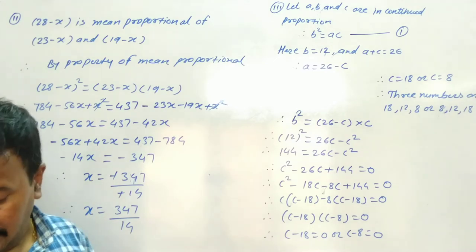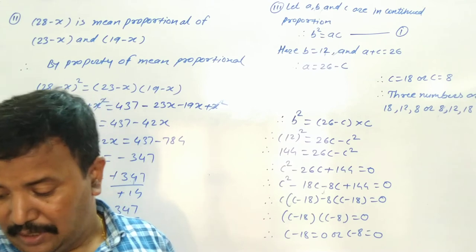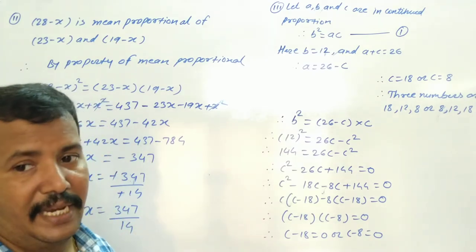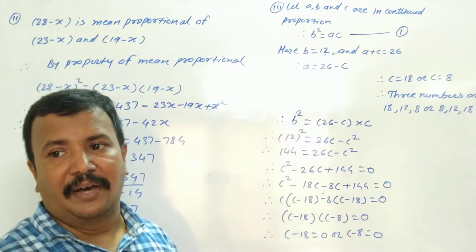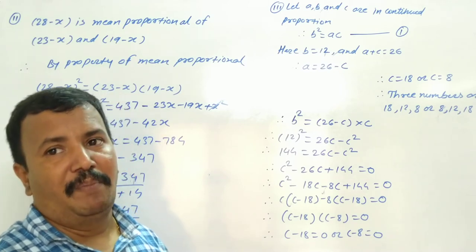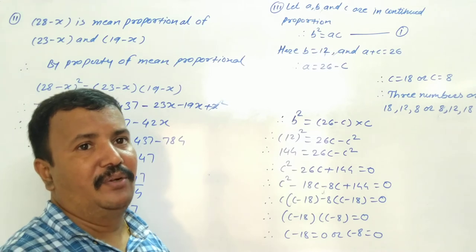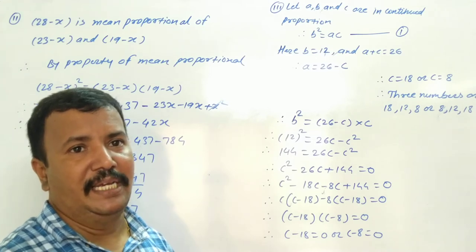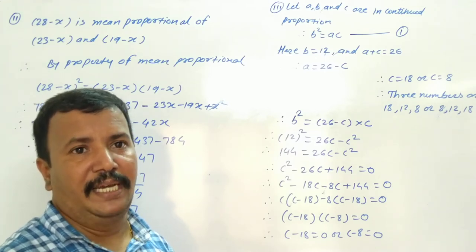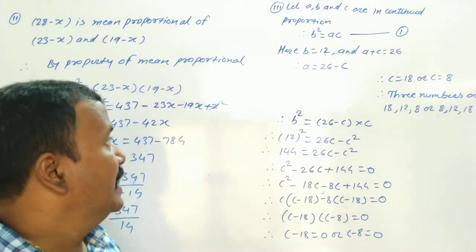Next question: three numbers A, B, C are in continued proportion. The mean proportion is 12, and the sum of the remaining two numbers is 26, meaning A plus C equals 26.